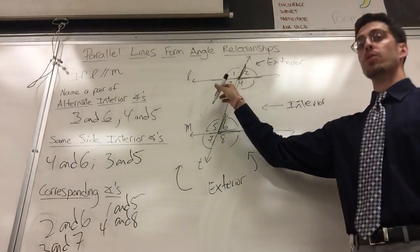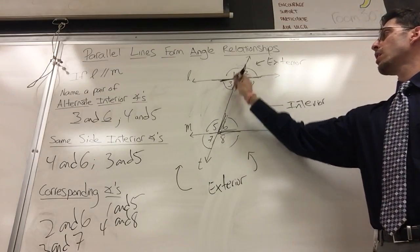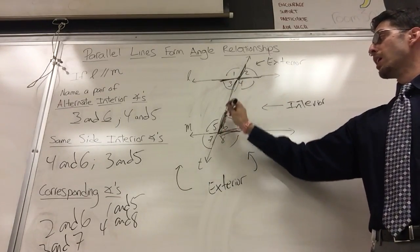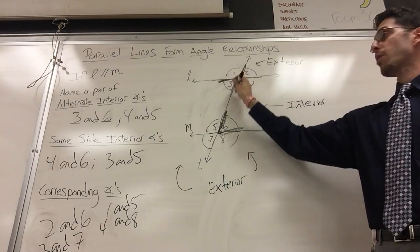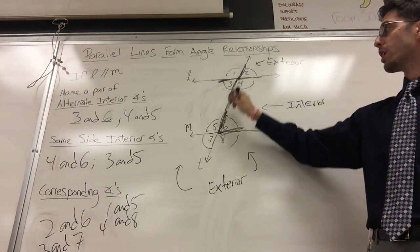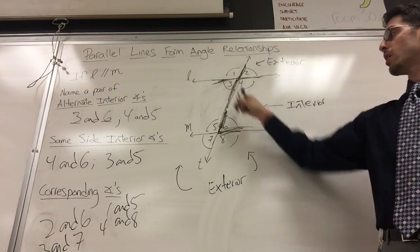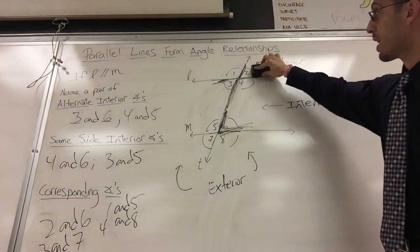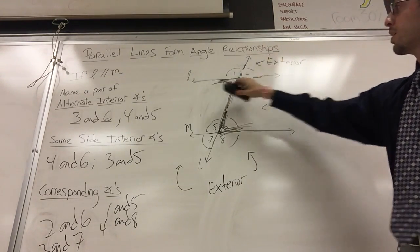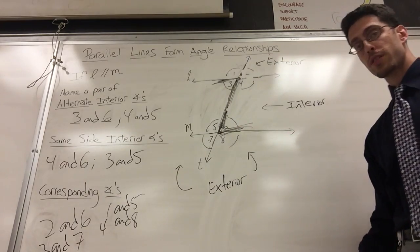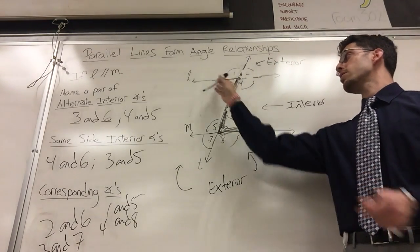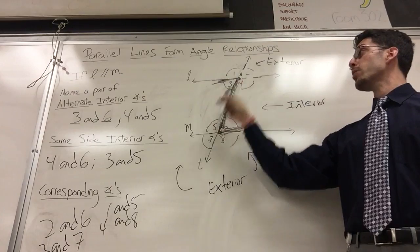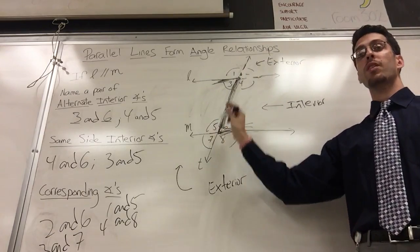Alternate interior: look at angle three and angle six. See I'm highlighting angle six, I'm highlighting angle three. If I really, super annoyingly highlight them, I made like a Z, the letter Z. I call it the Z property, which says these are alternate interior angles.